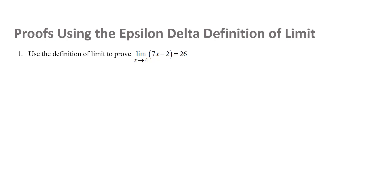Whenever we start a proof we want to make sure that we identify that's what we're doing, so I usually write 'proof' at the beginning. Since we're using the epsilon-delta definition, the structure of our proof must follow the structure of that definition. That definition says that for every epsilon we're able to find a delta that makes a certain implication true, so we start with some arbitrary epsilon that we assume is given — meaning the proof holds for any epsilon greater than zero.